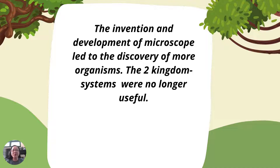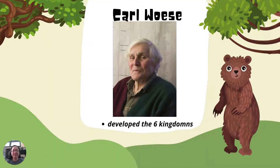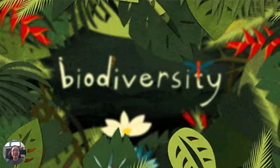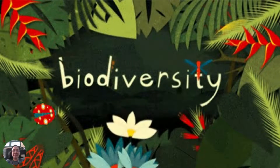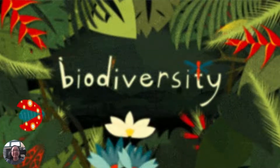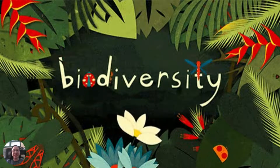The two-kingdom system was no longer useful. This led to what is now known as biodiversity, comprising the six kingdoms.